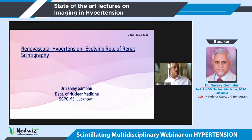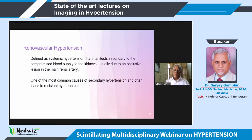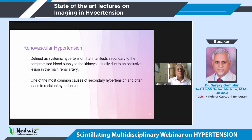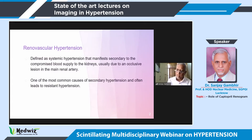Good morning. The role I've been given this morning is to talk about captopril renal scintigraphy in evaluation of renal vascular hypertension. As earlier speakers have discussed, Dr. Vitesha gave a long list of various causes of hypertension, including renal vascular hypertension, which constitutes one to two percent of secondary hypertension. Overall it's a very small group of patients, but a very important one because there is scope and possibility of better controlling and offering something to these patients.